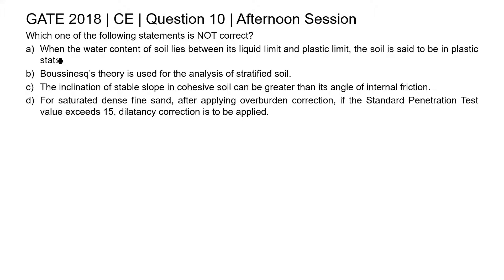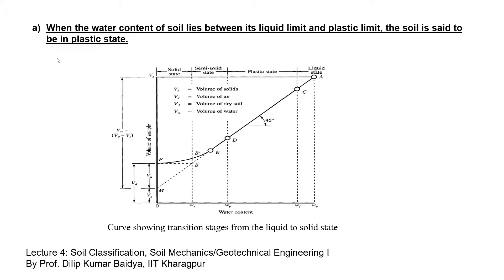Let us check each statement one by one. The first statement is: when the water content of soil lies between its liquid limit and plastic limit, the soil is said to be in plastic state. This question is from the topic of Atterberg limits. You may watch this lecture to explore your knowledge about the Atterberg limit or consistency of soil.